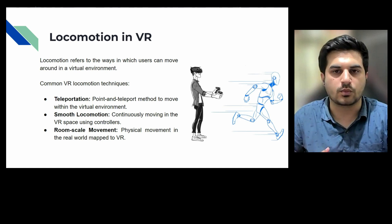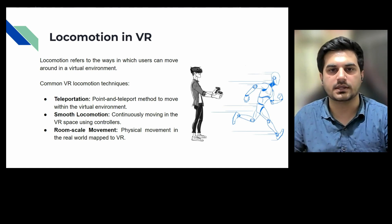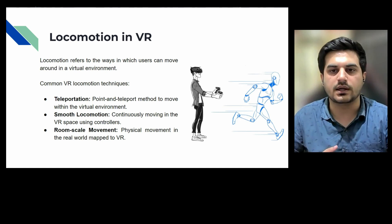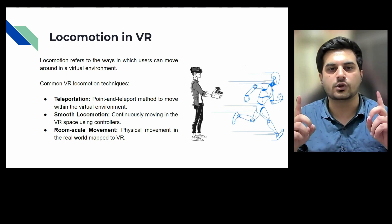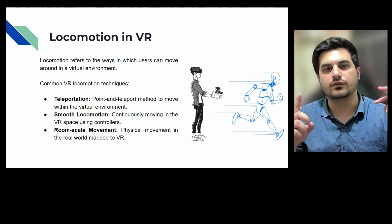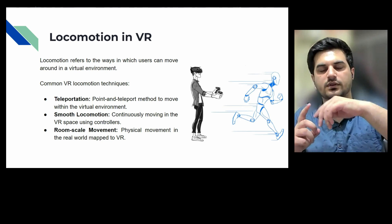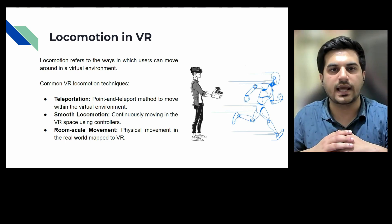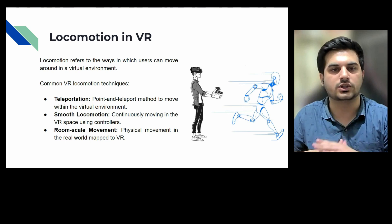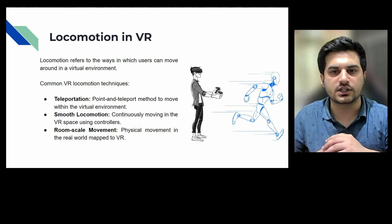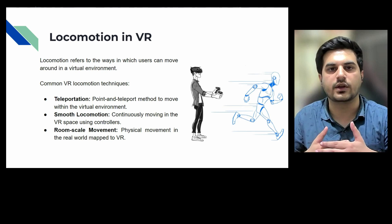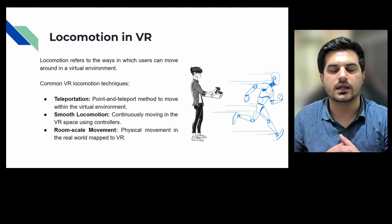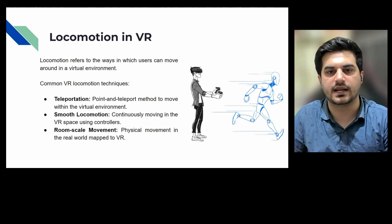The last method is room-scale. In this, we have to physically move. Suppose we are moving from point A to point B — we are physically moving in real space, and that movement is reflected in the virtual environment. In teleportation and smooth locomotion, we are not moving in the real world; we are only moving in the virtual world. These are the three basic locomotion techniques used in virtual reality.